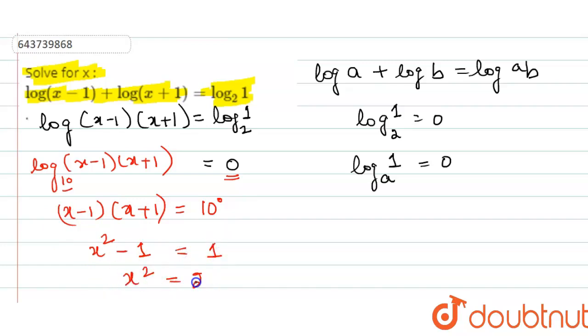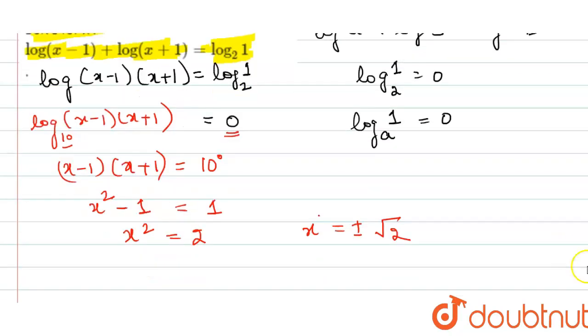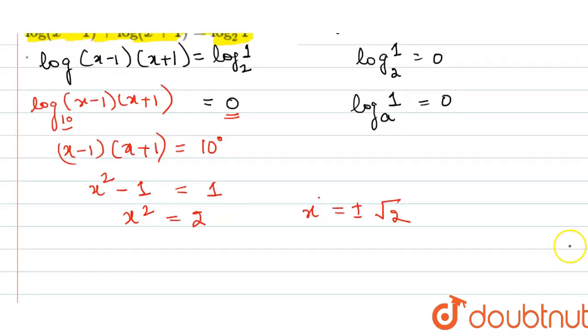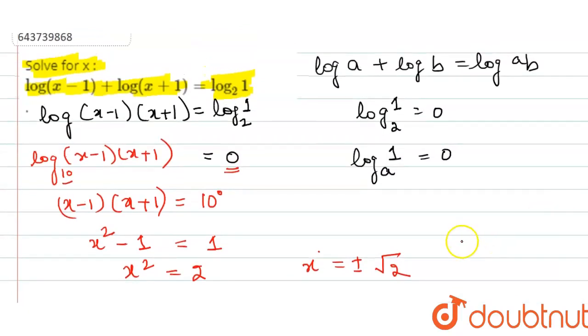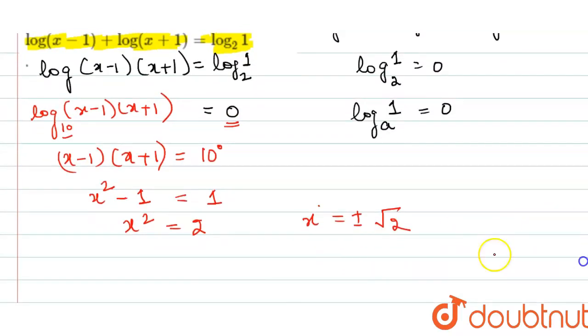And solving for the value of x will be getting the answer as x = ±√2. But here, according to the property of the log, because x cannot be negative, x cannot be negative.